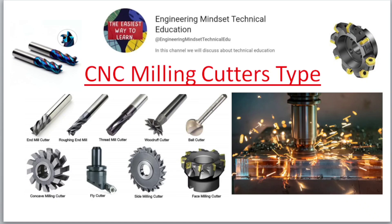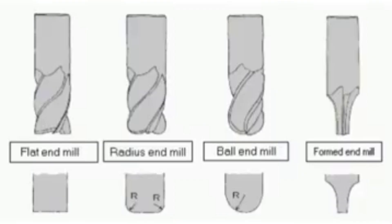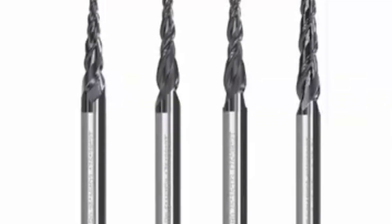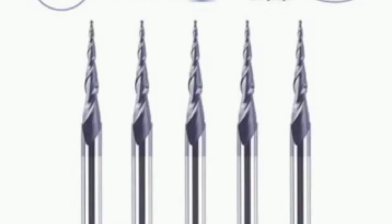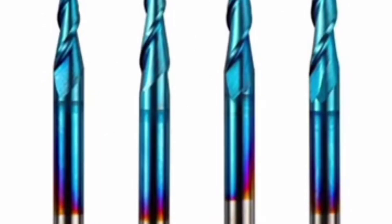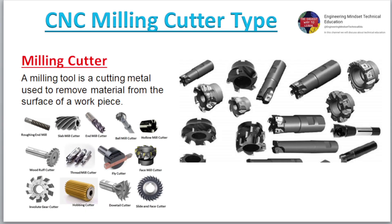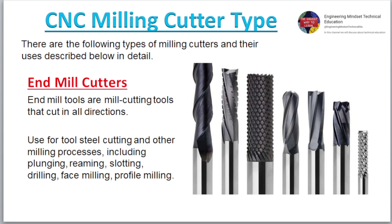Milling cutter types. A milling tool is a cutting tool used to remove material from the surface of a work piece. There are the following types of milling cutters and their uses described below in detail.